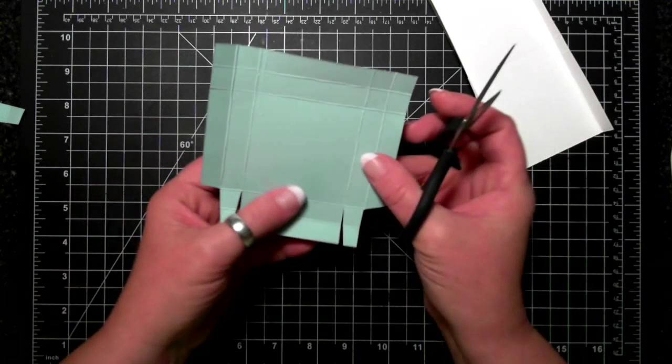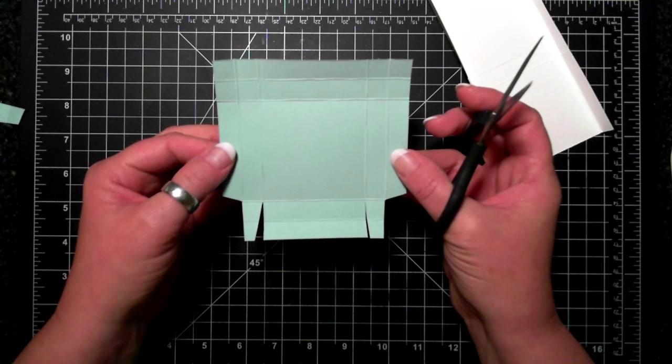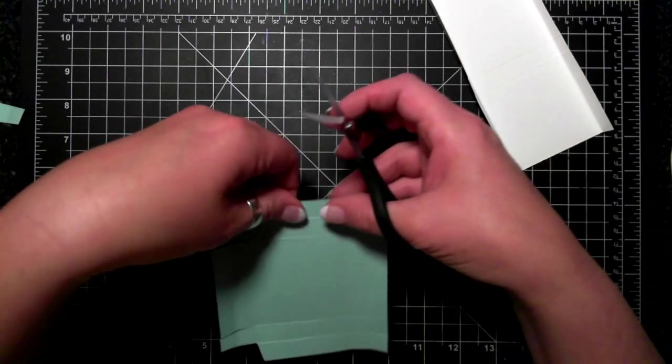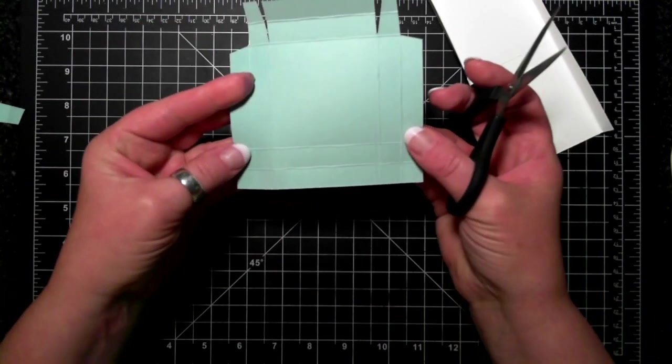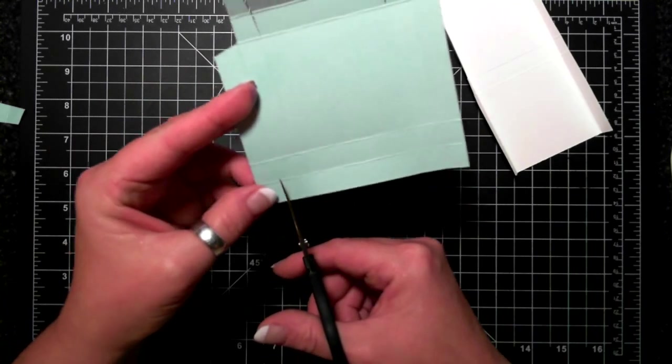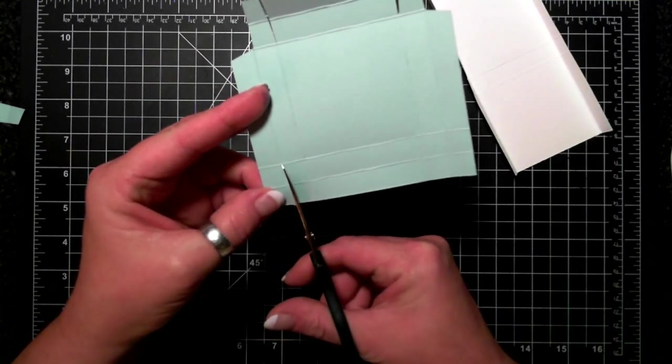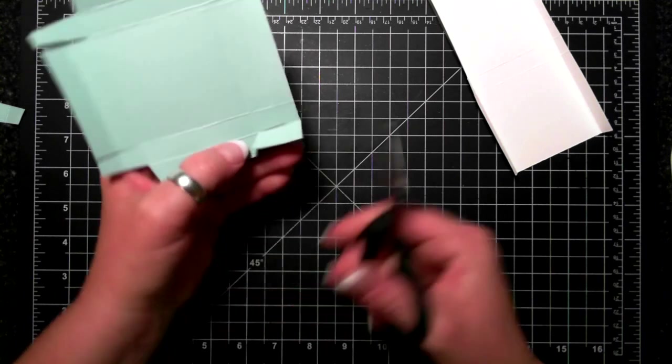You have something that looks like that. So what we're going to do is turn around and do exactly the same thing on the other side. I'm angling it here and angling it there.